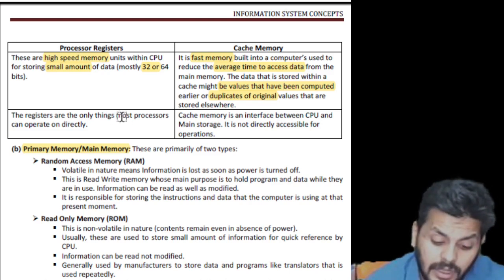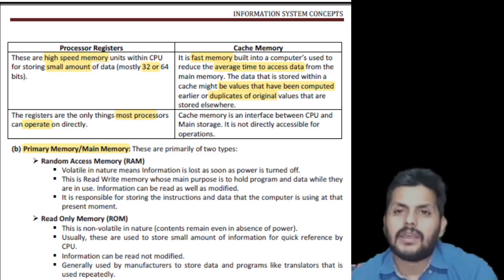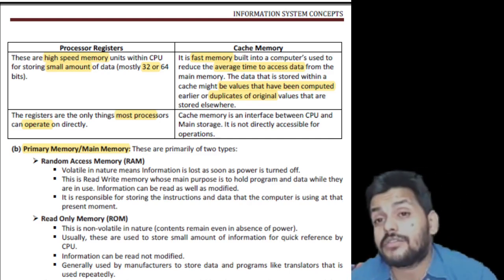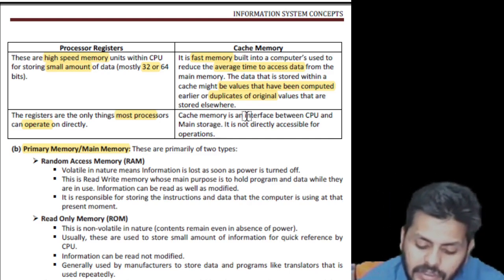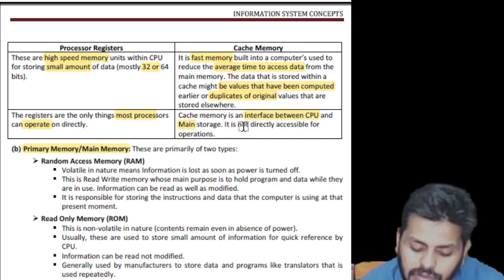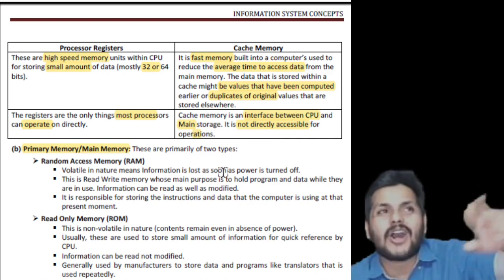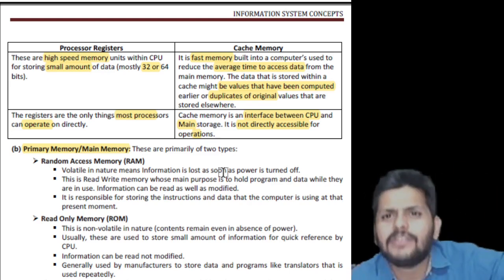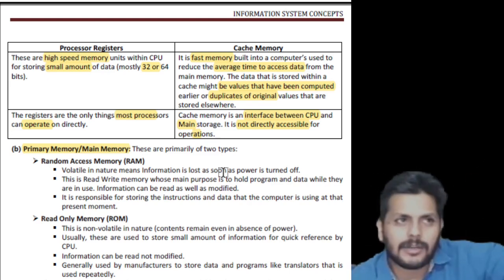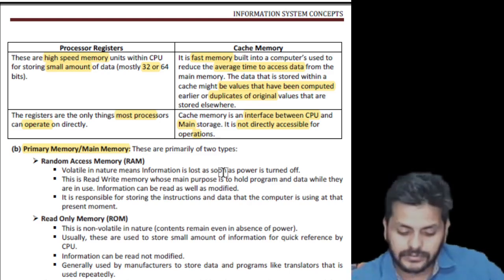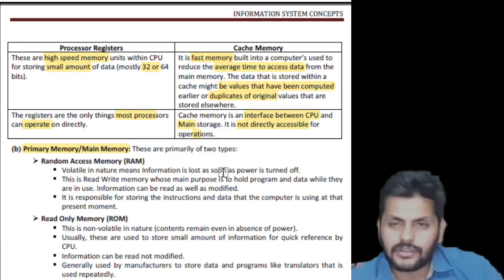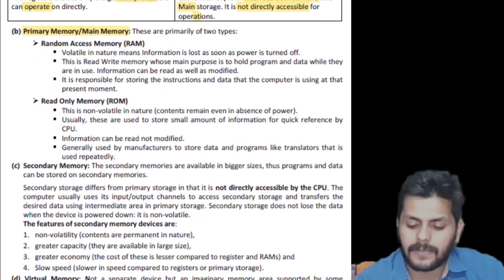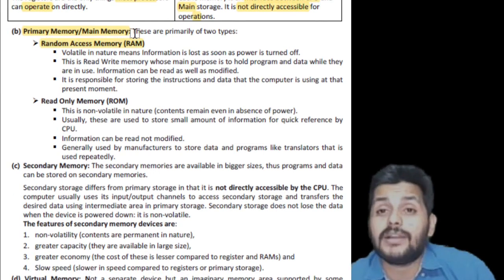Some content in the system cannot be changed — that is stored in ROM (Read Only Memory). ROM stores permanent data like manufacturer's information — the IMEI number, serial number of a phone. RAM is volatile in nature — data is lost as soon as power is turned off. RAM is a read-write memory whose main purpose is to hold programs and data while they are in use.